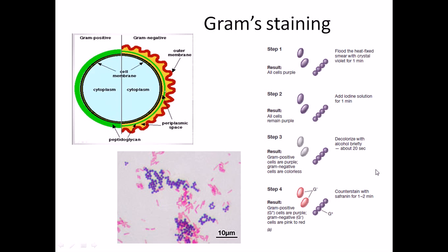Welcome back. In this video let's talk about the principle of gram staining. I will be focusing on the practical approach rather than the purely theoretical approach. Gram staining is something you can't ignore if you're a microbiologist — it's the first thing you should do to classify a bacteria, because once you understand whether it is gram positive or gram negative, you can classify it and know its different properties.